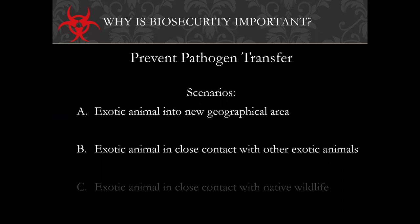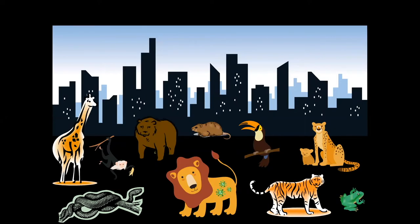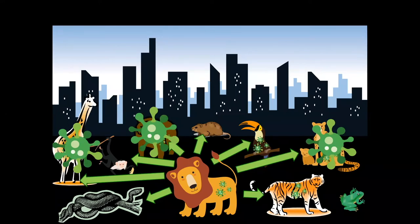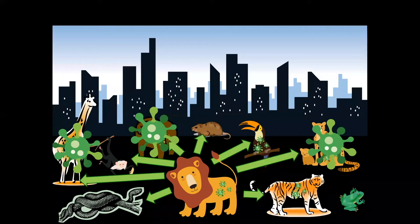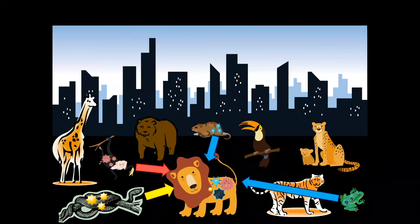Second scenario: an exotic animal is in close contact with other exotic animals in the zoo. Pathogens from your lion may transfer to other animals, some susceptible, some not, potentially causing an outbreak of exotic disease. West Nile virus is an example — it spread to naive species including horses, people, and flamingos that had no natural immunity. Third: exotic animals can come into contact with native wildlife. Most zoos are the only green spaces left in urban environments and serve as refuge for local wildlife, enabling two-way pathogen transfer.